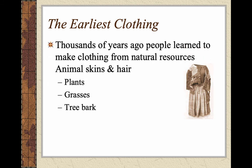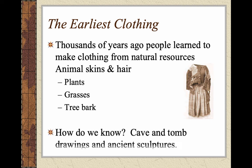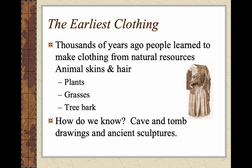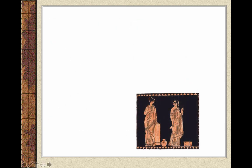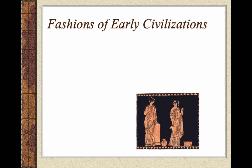The early types of clothing appeared thousands of years ago. They did learn to use animal skins and hair, and they used things like plants, grasses, and tree bark — able to get fibers from tree bark as well as animal hides and hair. We know this from cave drawings, tomb drawings, and ancient sculptures. A lot of the early evidence comes from sculptures and paintings and drawings, not so much actual ancient pieces until we get a little more modern.